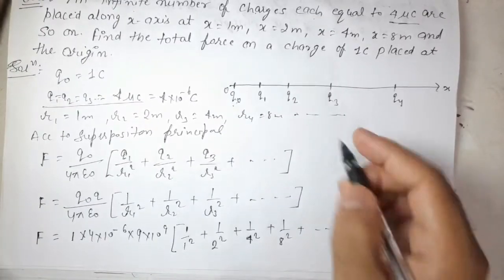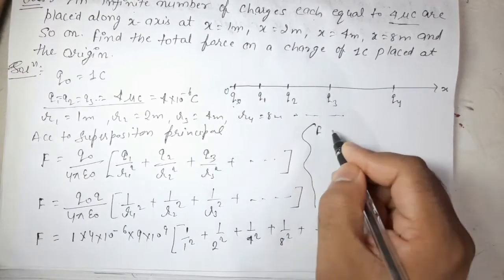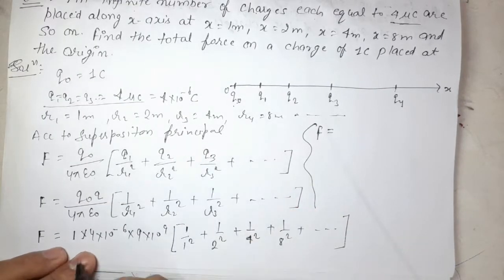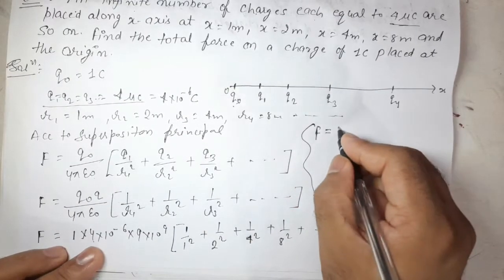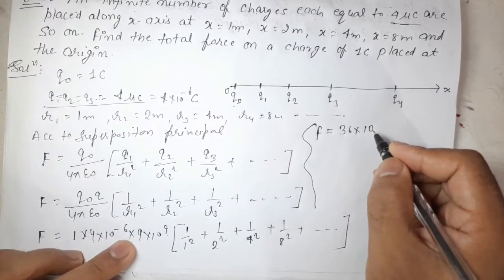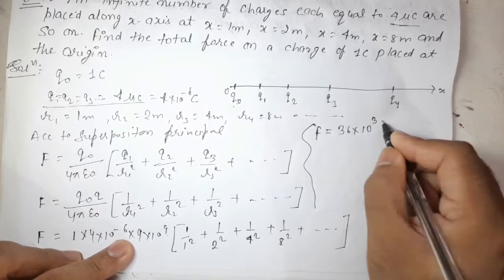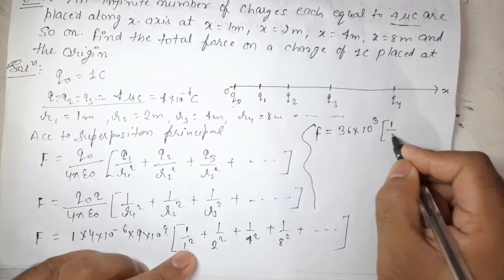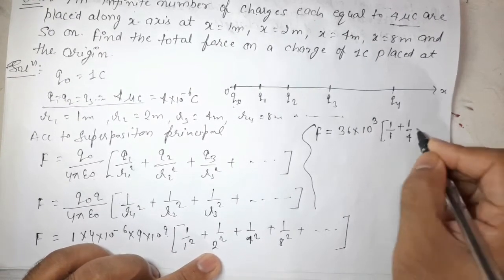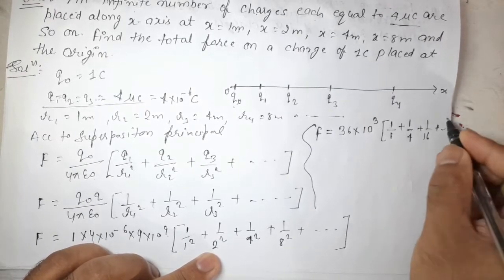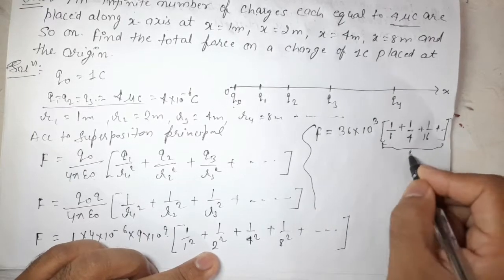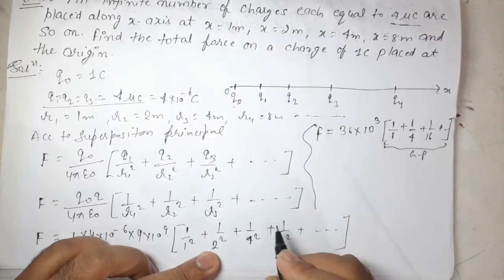Now let us evaluate F_net. Multiplying 4 and 9 gives 36, and 10⁹ × 10⁻⁶ = 10³. The series 1/1 + 1/4 + 1/16 + ... represents a geometric progression (GP), which we can sum using the formula A1 / (1 − r). The common ratio r = (1/4) / 1 = 1/4.